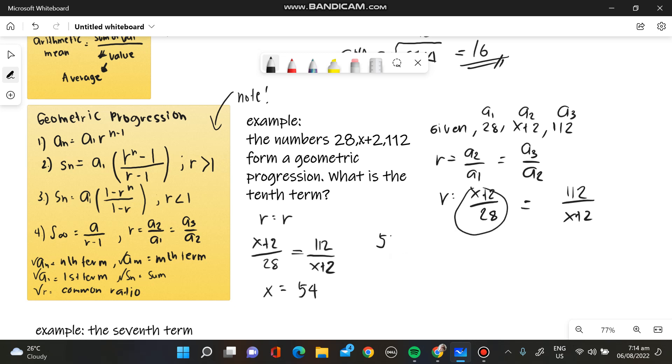We will have 54 plus 2 over 28 is equivalent to R value. So what is our R value now? So by calculator, we can have the value of 2. So since we have 2, we can use our first formula now because we already have R and we have A sub N.